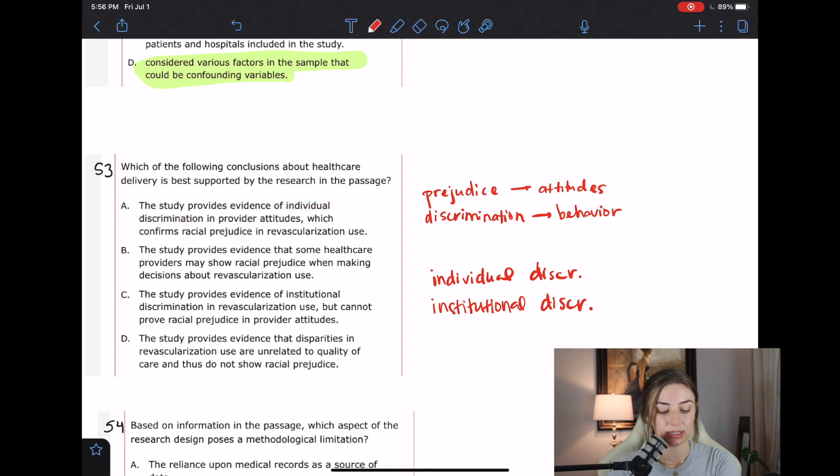B, the study provides evidence that some healthcare providers may show racial prejudice when making decisions about revascularization use. So it's kind of hard to decide whether there is prejudice involved in this because we are just given the outcome. We are just given like how many people got the revascularization procedure, which that is a behavioral outcome. That is like, did they get it or not? That is overt. So I don't know. I want it to say discrimination and not prejudice.